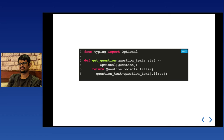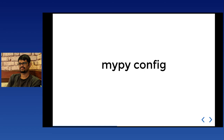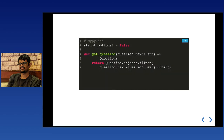There are two ways to fix this. The first way is to change the annotation to `Optional[Question]`, meaning the function can return either `None` or an instance of `Question`. The second way is to configure mypy with `strict_optional = False`. When this is set, mypy understands it is possible to return `None` but will not complain about it.